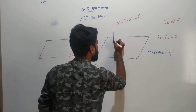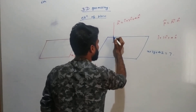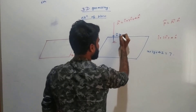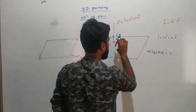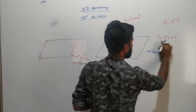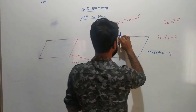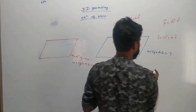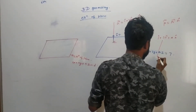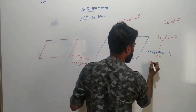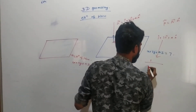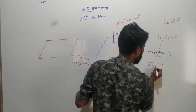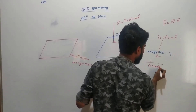Suppose the unit vector is like this — so this vector is n-cap, not the n vector. To find the direction cosines, the magnitude will be 1 squared plus 3 squared plus 4 squared, all under the square root.